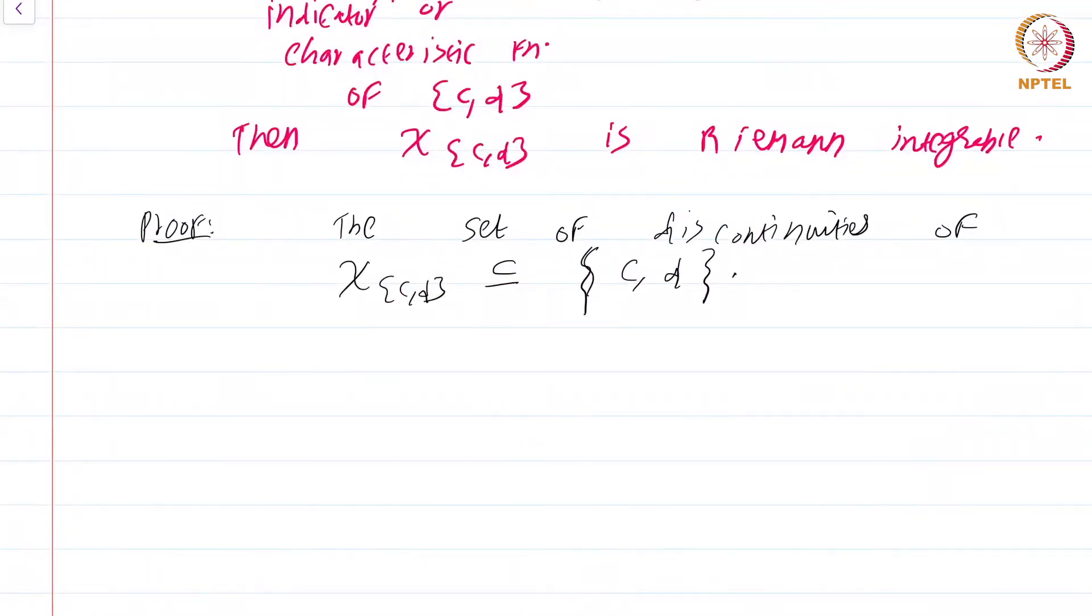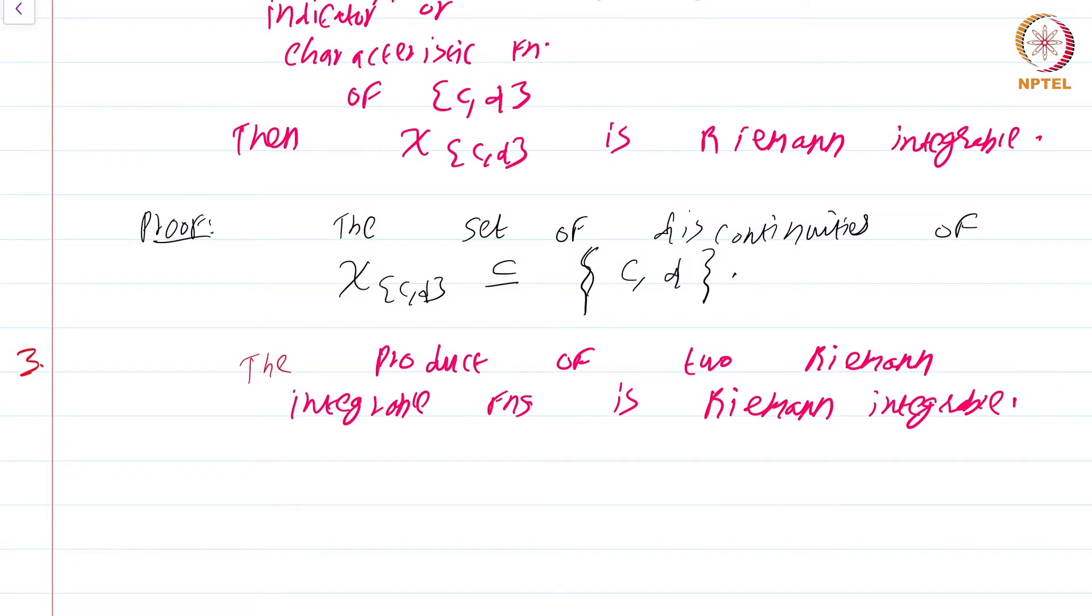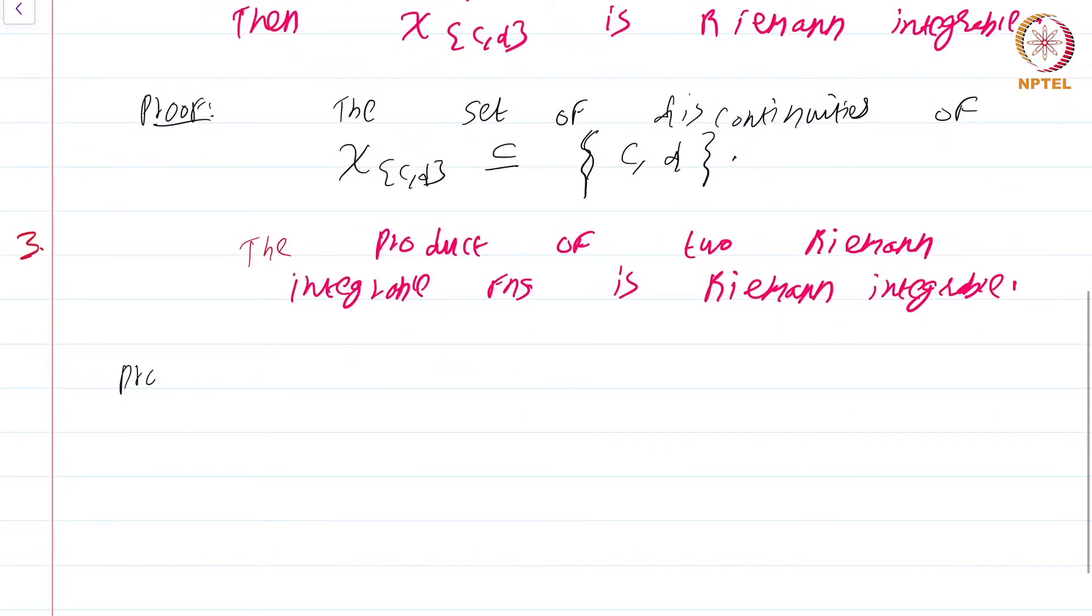So I am going to stop writing corollary and just write a numeral because it saves time. [Corollary 3:] The product of two Riemann integrable functions is Riemann integrable. So let us see a proof of this. The proof is not hard.